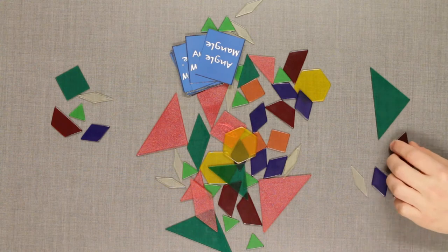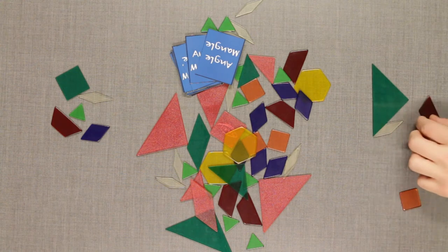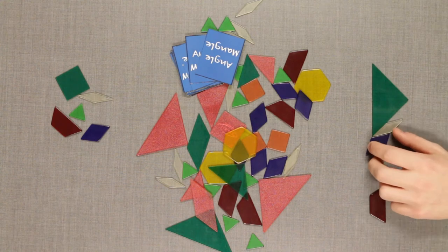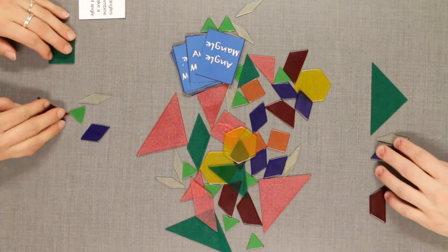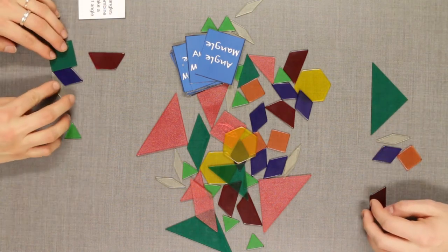If you cannot complete the task with your shapes, the player to your left can attempt to complete the task. The player who completes the task earns a token and if no one completes the task, discard and pick a new card.